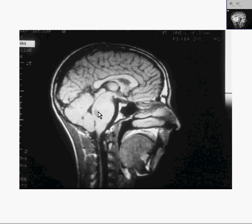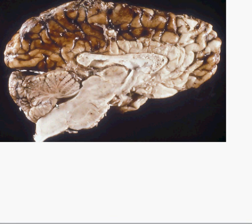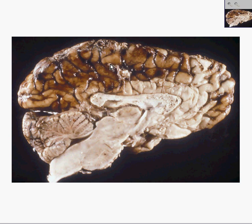If this is a tumor, it is not very well defined, is it? And unfortunately, we have that same problem with the gross picture as well. You can see a normal cerebellum, a normal cerebrum, a normal corpus callosum. But look at this pons and midbrain area — there seems to be some irregularity, enlargement, but very, very poorly defined.